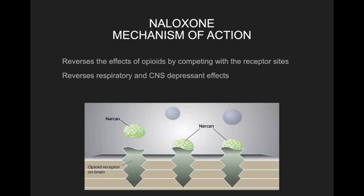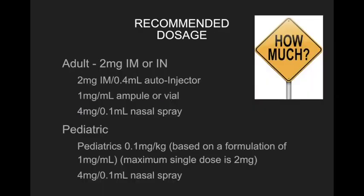The mechanism of action for naloxone is that it reverses the effects of opioids by competing with receptor sites. Narcan gets in there and blocks the opioid from getting into the cells, reversing the respiratory and CNS depressant side effects. The patient may get a little upset because you're taking them away from their high.